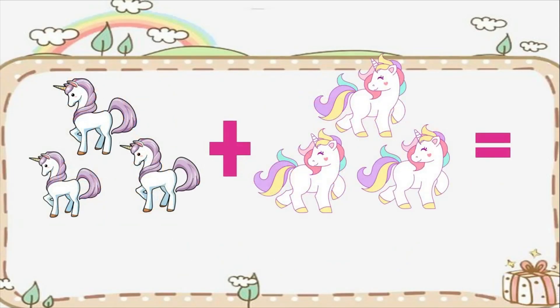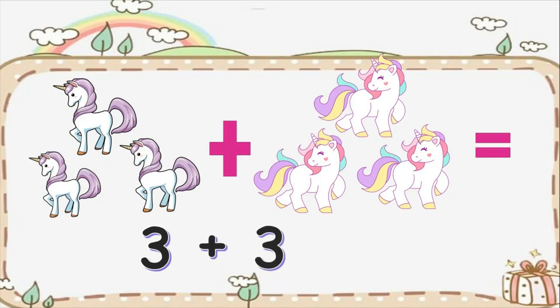Now you try it. How many unicorns do you see? Can you count the purple unicorns? Correct. We have three purple unicorns. How about the rainbow unicorns? We have three rainbow unicorns. Three plus three equals how many unicorns in all? Count them all together. Correct. We have six unicorns in all.